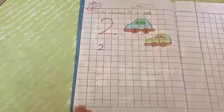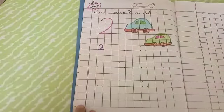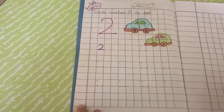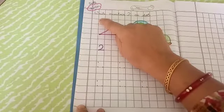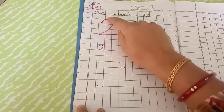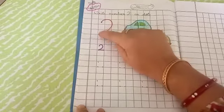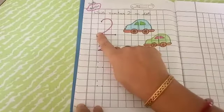Yes, yes. Once again we will do the tracing of number 2 with our finger. Put the finger here. Yes, move, take a curve and stop. Now go straight.